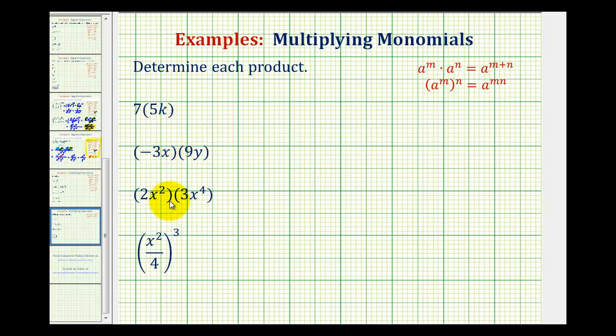We want to multiply the following monomials. Here we have seven times five k. Well remember, five k means five times k. So these are all connected by multiplication, so if we wanted to, we could write this as seven times five times k, which is equal to 35k.